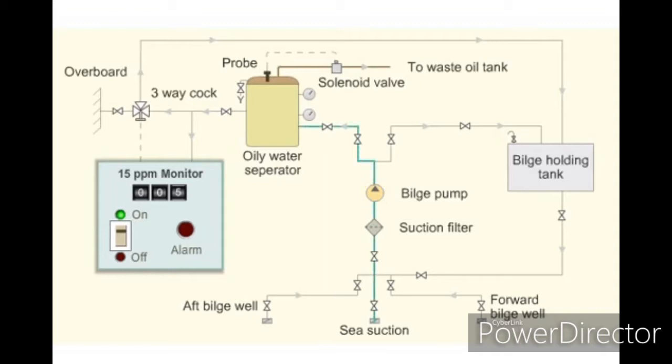Open the test cock located on the top, and when water starts flowing, open the bilge holding tank valve and shut the sea suction valve. Now the water in the bilge holding tank flows through the oily water separator and the three-way valve to overboard.